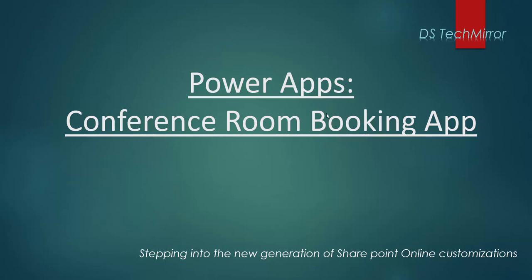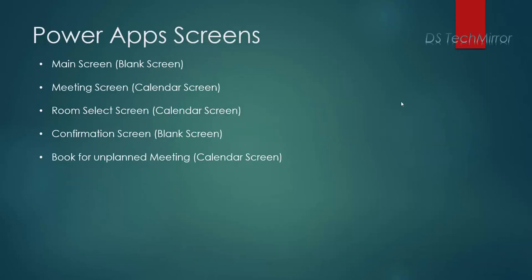Hello friends, welcome back to our YouTube channel DS Tech Mirror. Today's topic is how to create a conference room booking app using Power Apps. Before starting with the actual development, I'd like to give you a brief about the Power App we're going to create. In this app there will be five screens. The first screen will be called Main Screen, the second Meeting Screen, the third Room Select Screen, the fourth Confirmation Screen, and the fifth will be Book for Unplanned Meeting.